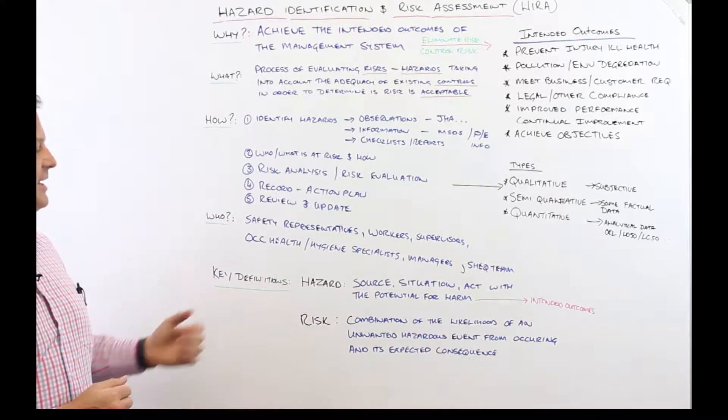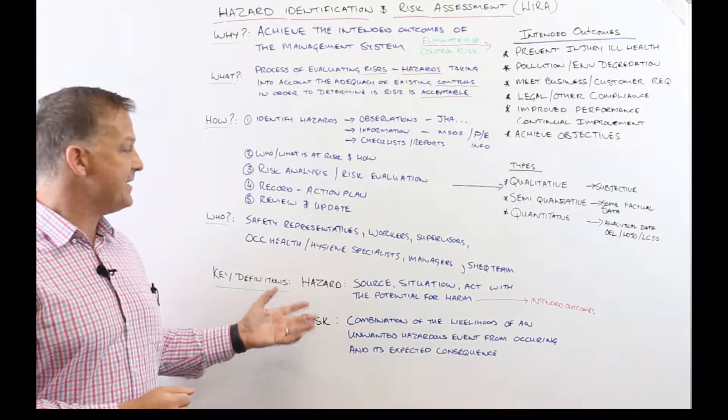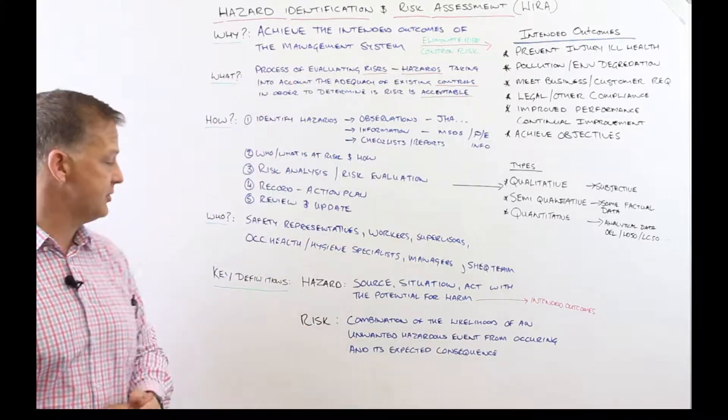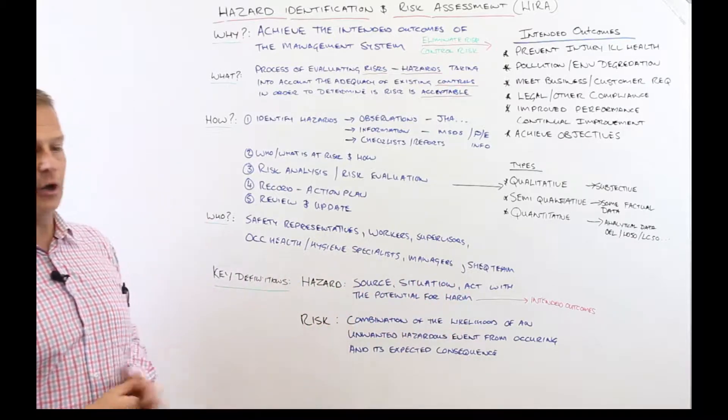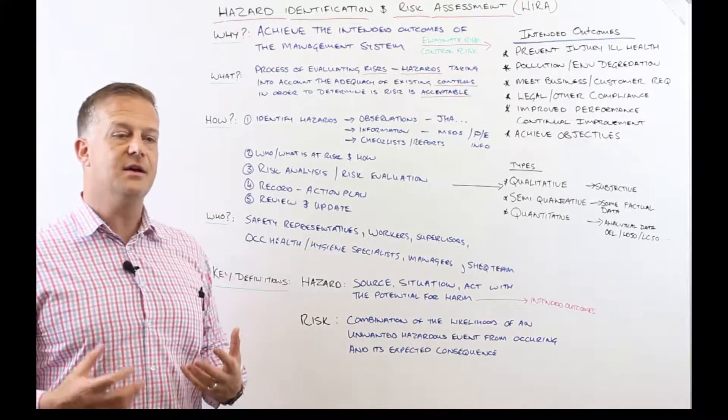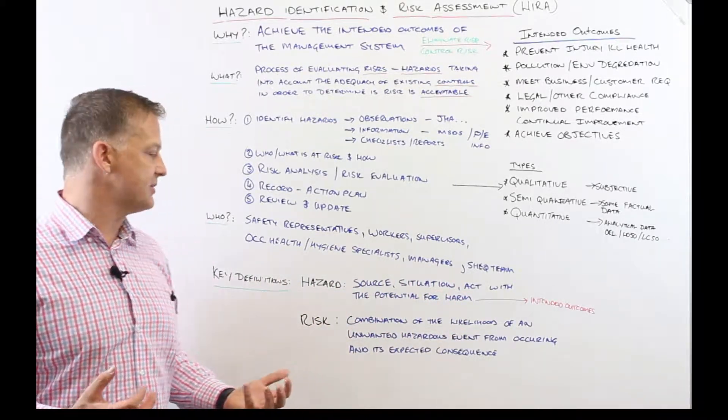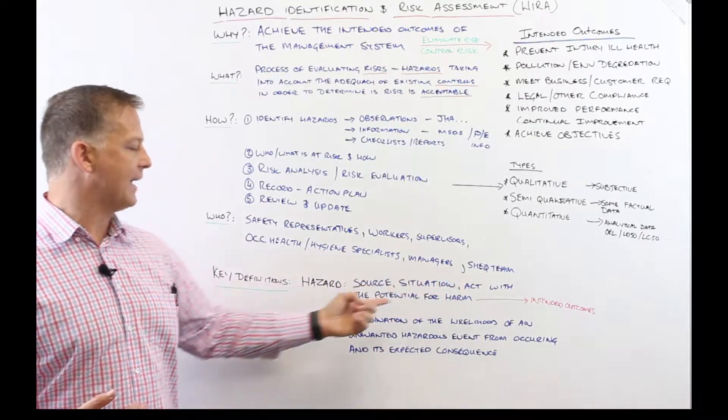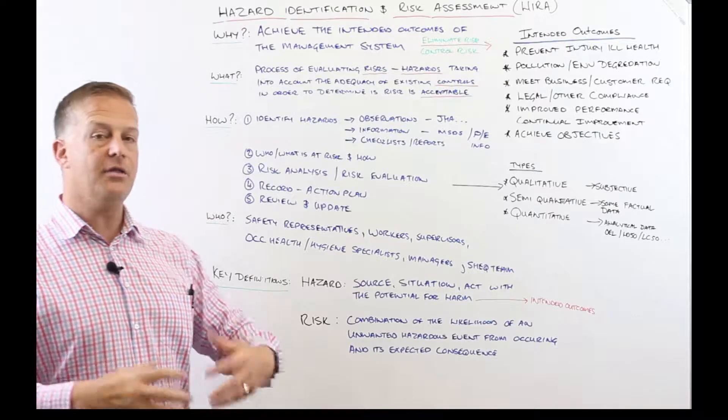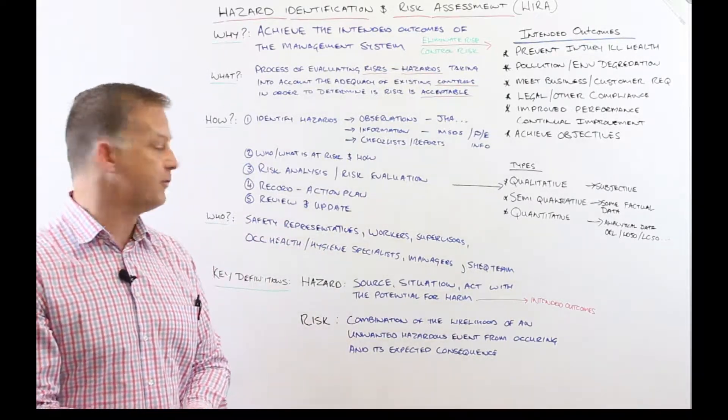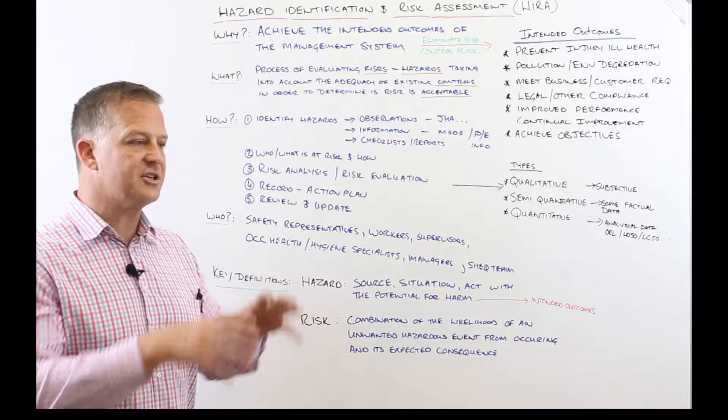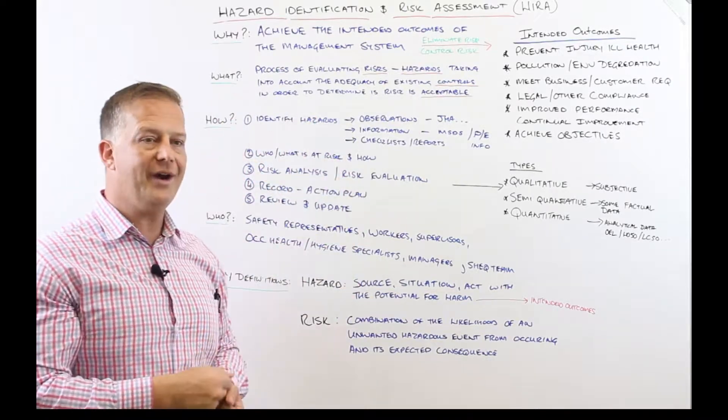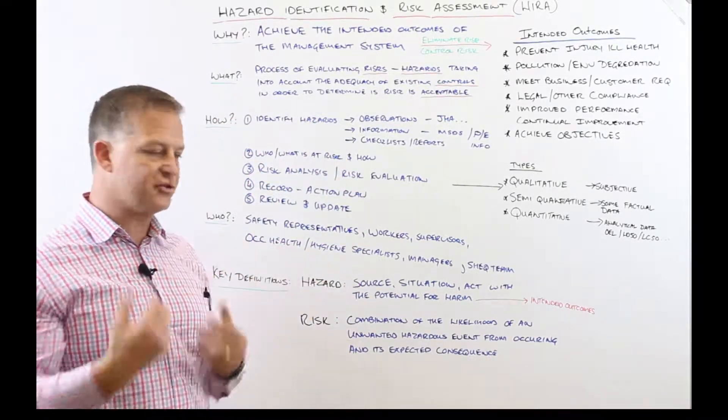So let's have a look at some of the key definitions. A hazard - we're looking at hazard identification risk assessment. This is taken from an older standard, but I always liked the definition from OHSAS 18001, where it says a hazard is the source, situation or act with the potential for harm. There are more updated definitions in terms of ISO 45001, but I always liked this because I felt that it portrayed quite a nice graphic image of how to extract hazards.